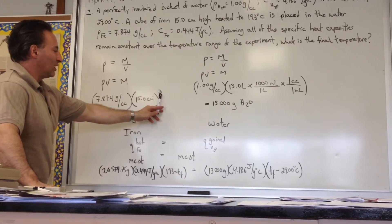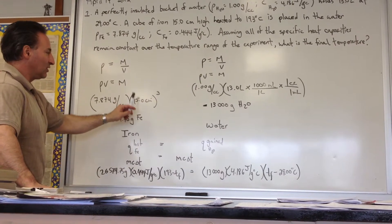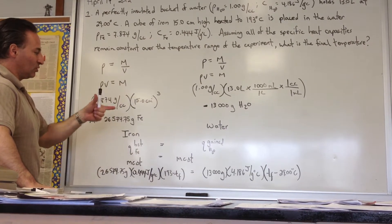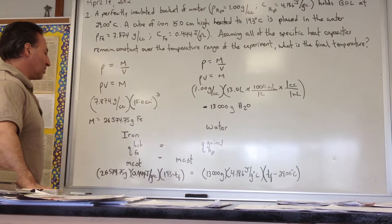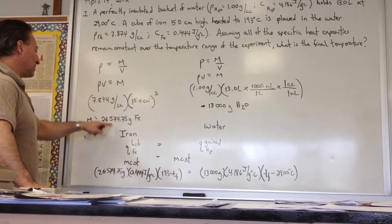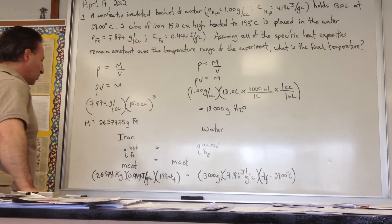Here is the height of the cube. Notice I cubed this value, which means I cubed the number and I cubed the unit. So it's 15 times 15 times 15, because a cube is length times width times height. That gives me the volume of the cube in centimeters cubed. Multiply the volume times the density and you get the mass. So it's a 26 kilogram cube of iron.